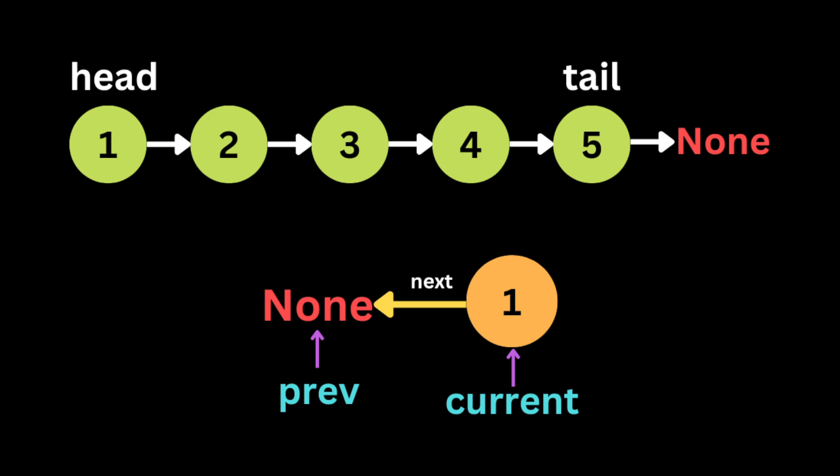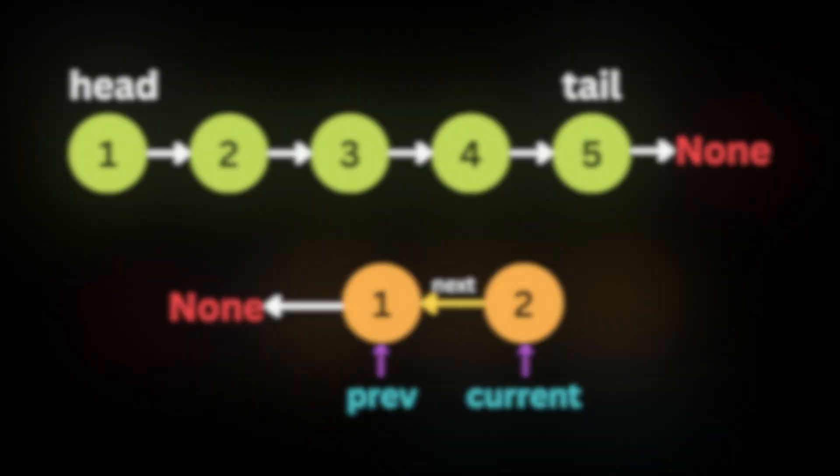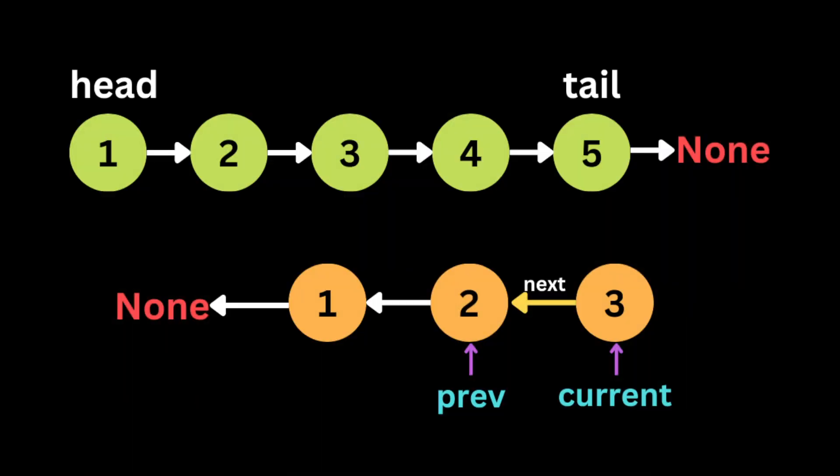After the first iteration, we're going to change the direction of the pointer of the head to be pointing to the previous node, which at the beginning of the iteration is going to be equal to none. Then we move the current variable to be at the next node, and move the previous variable to be at the place of the current node.